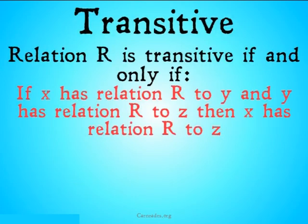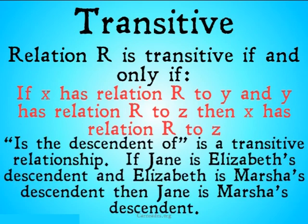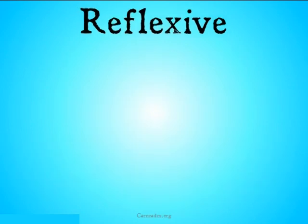Next we'll look at transitive. Relation R is transitive if and only if: if X has relation R to Y, and Y has relation R to Z, then X has relation R to Z. An example would be 'is the descendant of.' If Jane is Elizabeth's descendant, and Elizabeth is Marcia's descendant, then Jane is going to be Marcia's descendant. If one is the descendant of the other, and that other is the descendant of the third, then the first is going to be the descendant of the third. It has to be transitive.